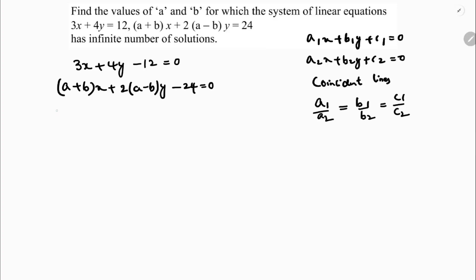So if I apply this condition here, 3 by (a plus b) equals 4 by 2(a minus b) equals minus 12 by minus 24. Now here you can equate the first one with the last constants and the second one with constants. We will get again two equations. If we simplify, you will get the answer.